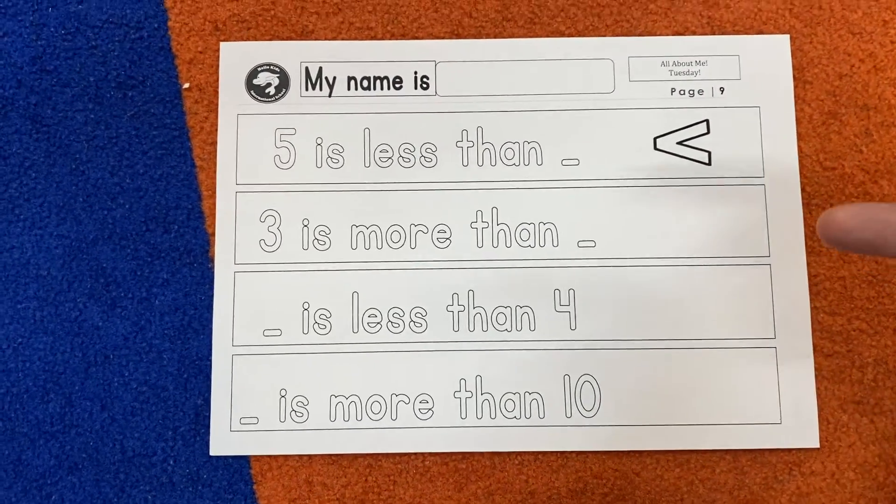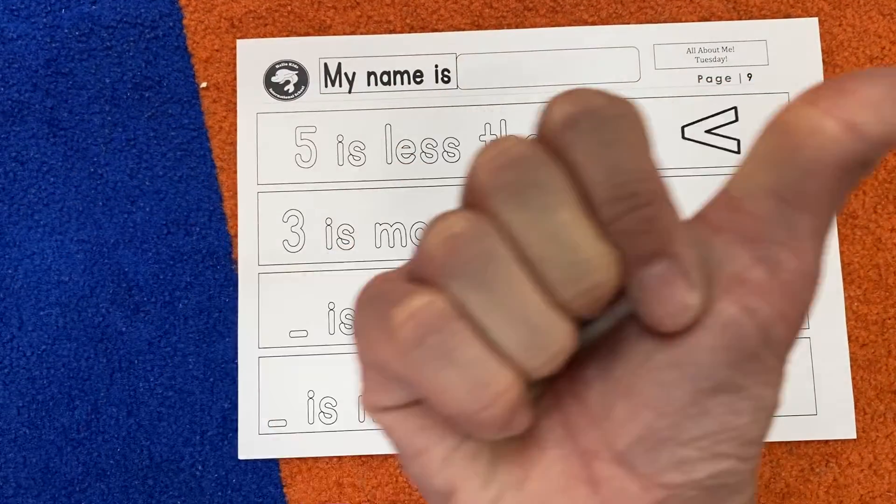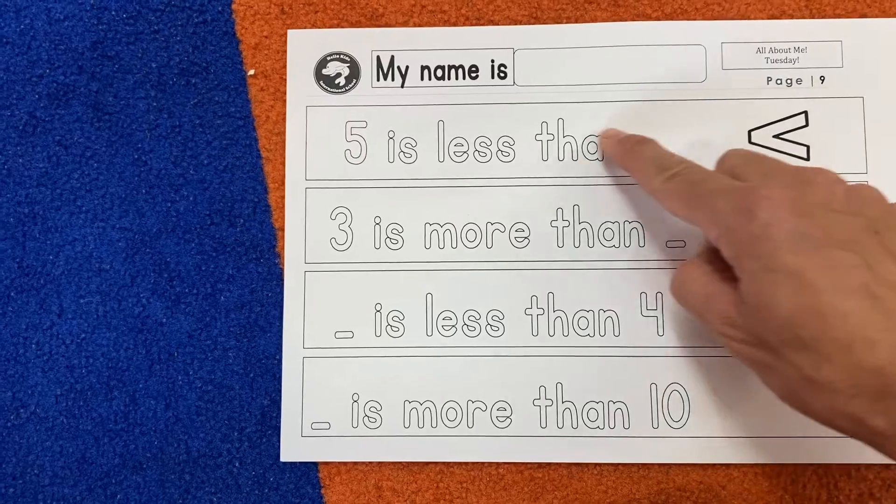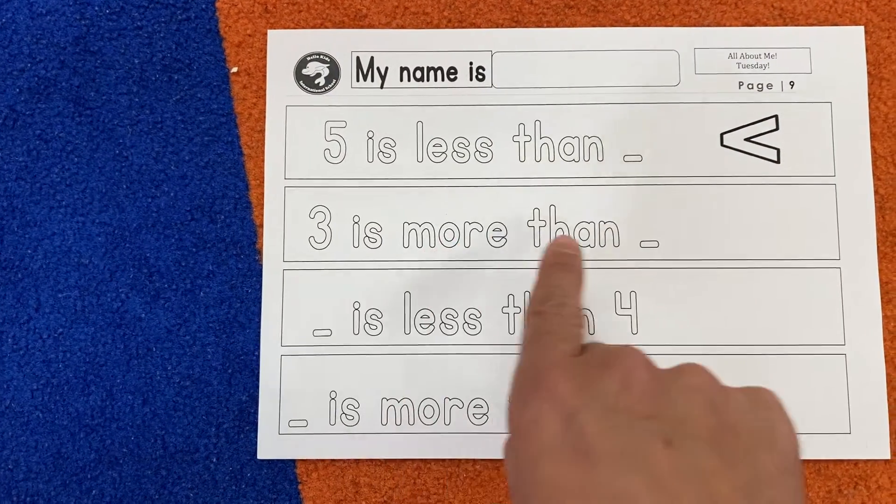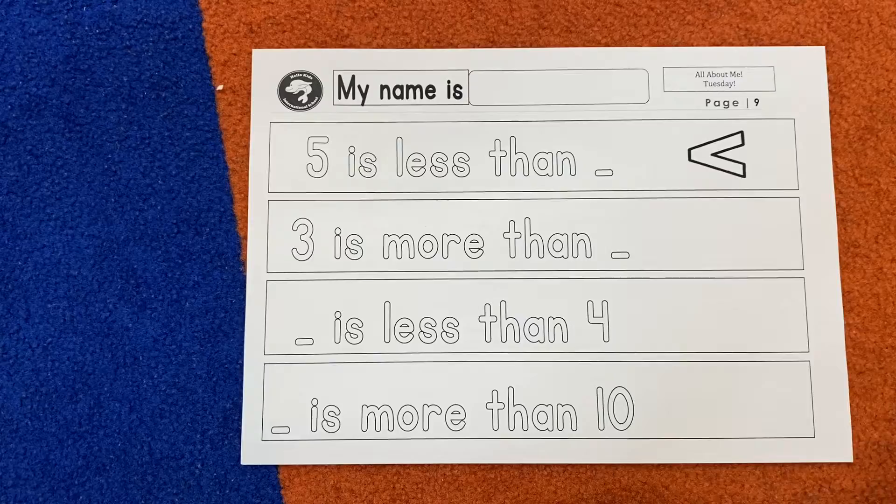Here we have a review: less than or more than. Less than points this way, more than points this way. What is a number less than five? Six? No. Four? Yes! Three? Yes! What is a number more than three? Two? No. Four? Yes! Five? Yes! You got it, you guys!